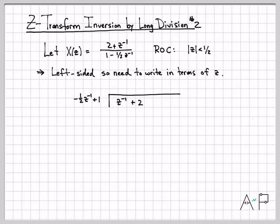Because of that, I actually think it helps to flip this around just a little bit. Instead of writing 1 minus 1 half z to the negative 1, I wrote it as negative 1 half z to the negative 1 plus 1. So I haven't changed anything there. Similarly, on the numerator, 2 plus z to the negative 1, I've written as z to the negative 1 plus 2. Same quantity.